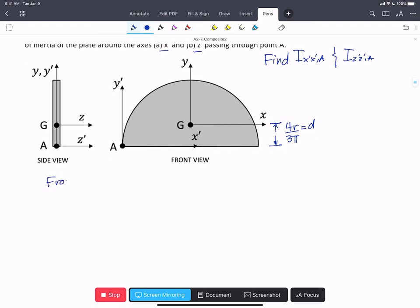Now, from our previous problem, we found that i_zz about G equals 1/2 m r² minus m times (4r over 3π)².